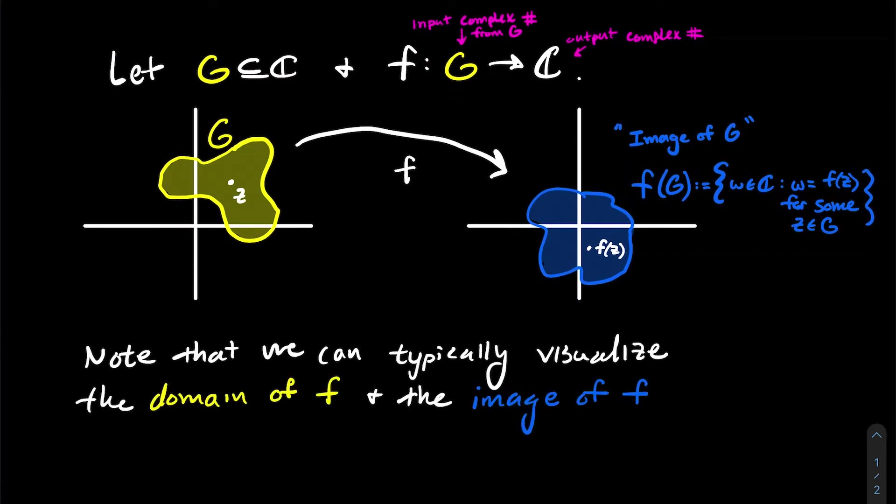And so note that we can typically visualize the domain of the function f and the image of f. And while I'm here, let me also say I use this word domain and it has a special topological meaning sometimes, where domain, if you watch the video about basic topology of the complex plane, the domain referred to a connected open set in the complex plane. For right now though, G is just any subset and so I just mean it in the college algebra sense. It's just the domain of the function, the set of all inputs. It doesn't have any prescribed topological properties right now.